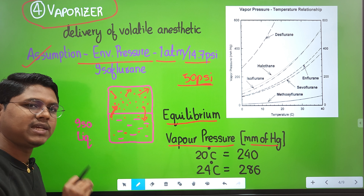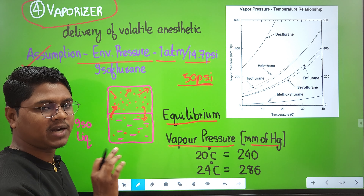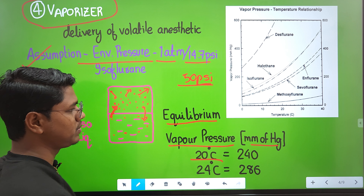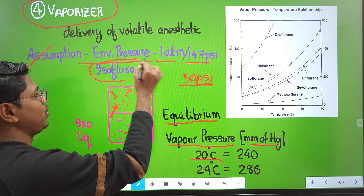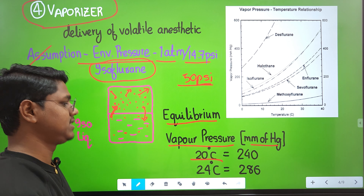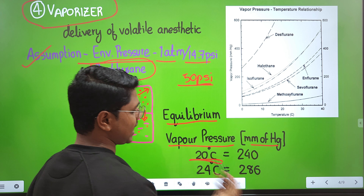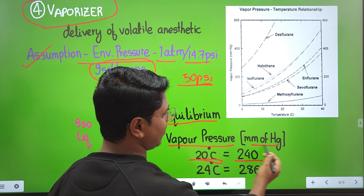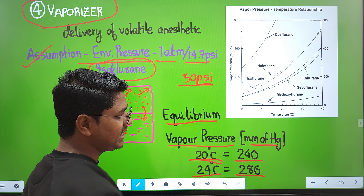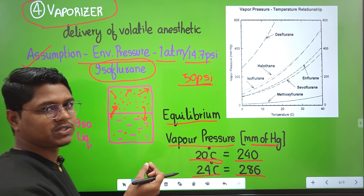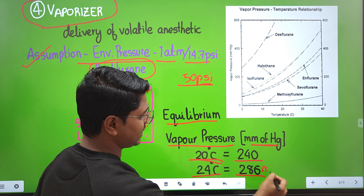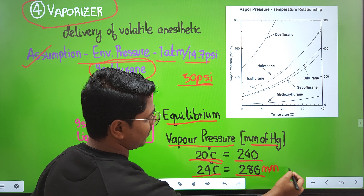Most vaporizers are calibrated at 20°C and 1 atm environmental pressure. At 20°C, isoflurane — the most commonly used inhalant anesthetic in veterinary practice — has a vapor pressure of 240 mmHg. If the temperature increases to 24°C, the vapor pressure increases to 286 mmHg, because pressure is directly proportional to temperature and inversely proportional to volume.